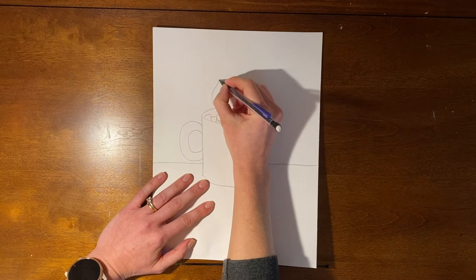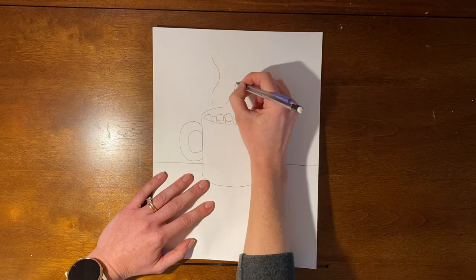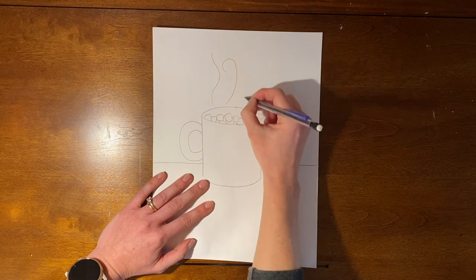You can also draw some wavy and swirly lines coming up from your mug to look like steam.